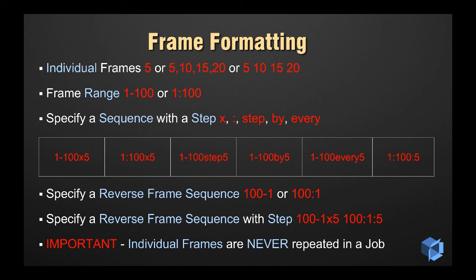An important rule to remember is that individual frames are never repeated in a Deadline job. So declaring a frame list of 5, 5, 5 will not render frame 5 a total of three times, but rather just once.